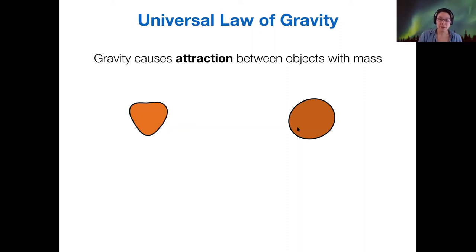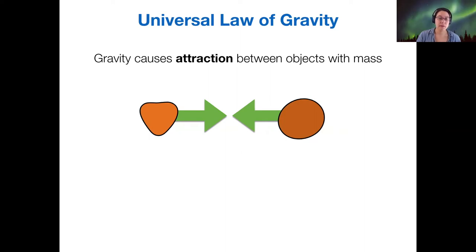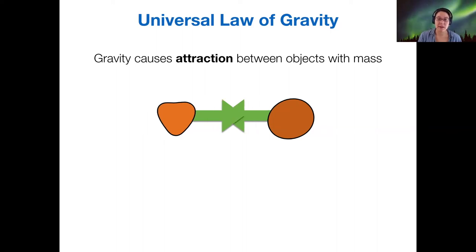If we have any two objects with mass, let's say these are two asteroids, then they will be attracted together by the force of gravity. This is true for any two objects anywhere, but it's only really noticeable for cases where one of those objects has a large mass. In the presence of that force, objects will accelerate toward each other. This is a consequence of Newton's second law of motion.